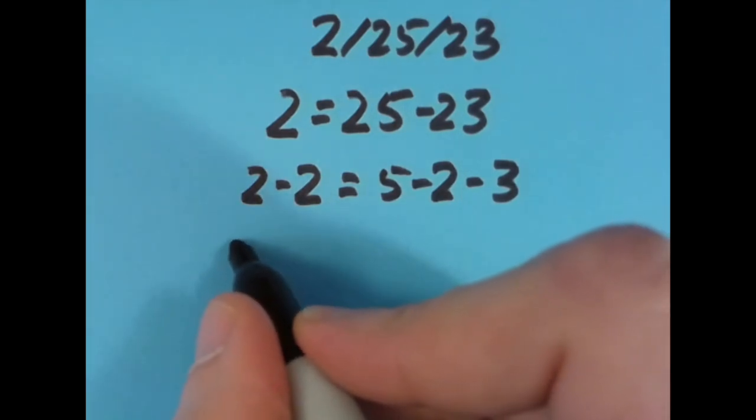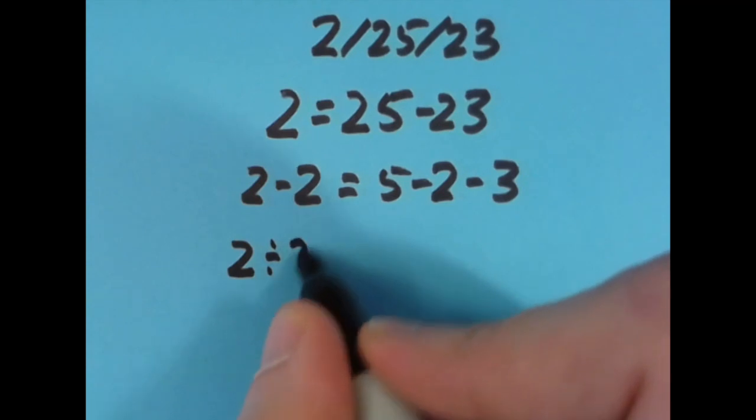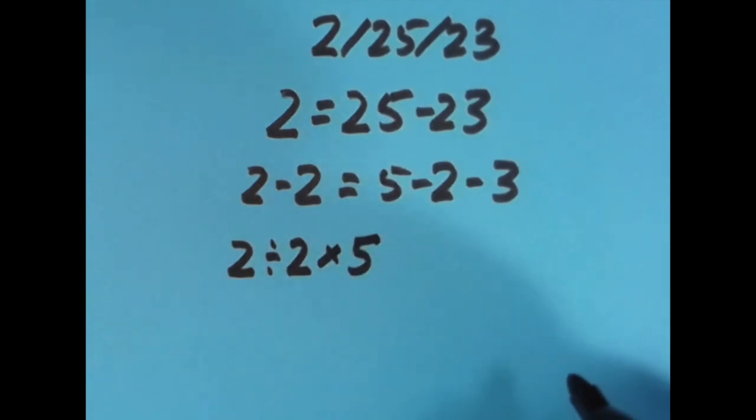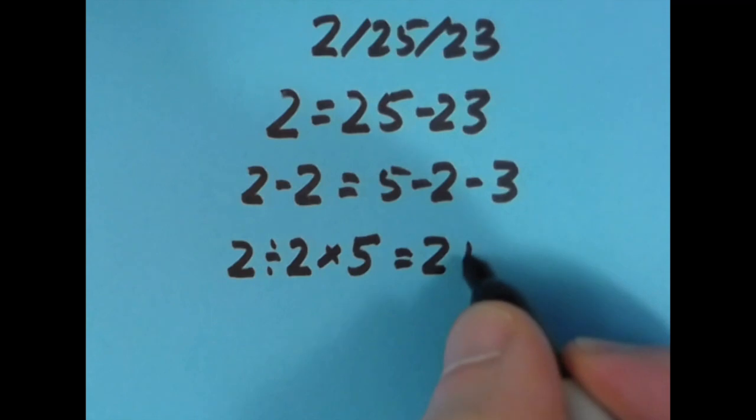With the equal sign another spot to the right, I said that 2 divided by 2 is 1, times 5 is 5, just like 2 plus 3.